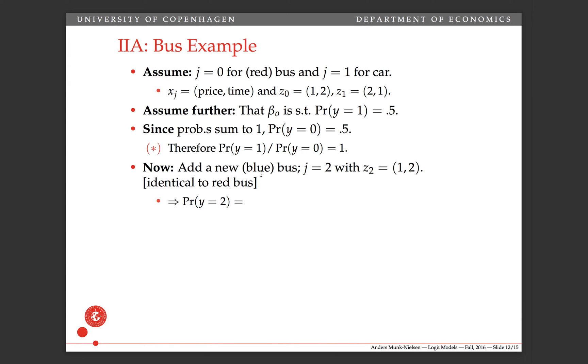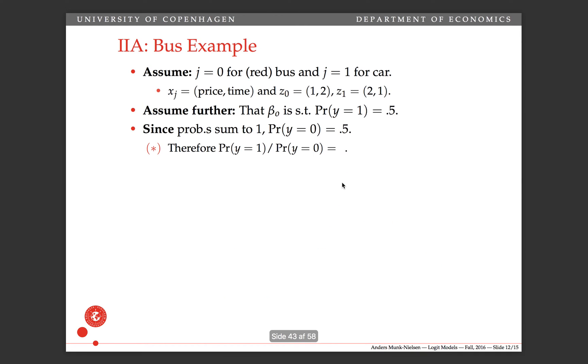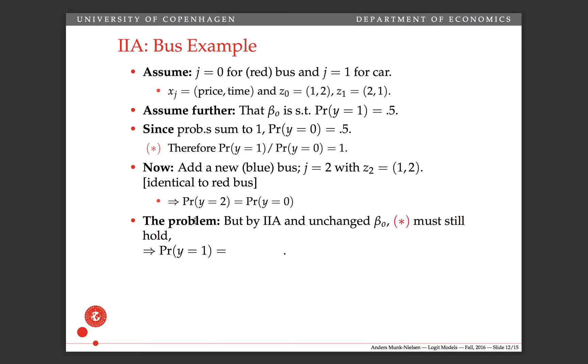Okay, now we add the extra alternative, a blue bus, called J equals two. And we give it exactly the same Z characteristics as J equals zero, which was the red bus. So we've added an identical alternative. Good. What's the probability of this alternative? It's going to be the same as the original probability because they have exactly the same characteristics. And recall that the choice probabilities is X beta divided by something. It's the same betas and when the X's are the same as well, it must be the same number. So it must be the case that this probability is the same as the probability of the red bus. Makes sense. They're identical in all the characteristics, so they must be the same market shares. The same shares of people taking them.